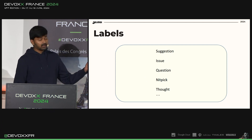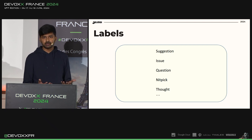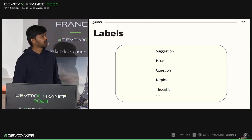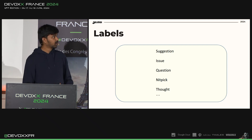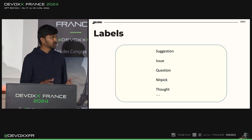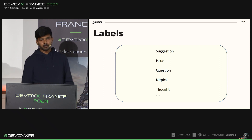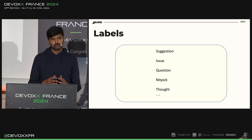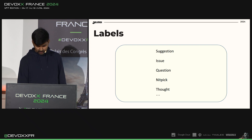What are the labels suggested by conventional comments? If you are giving a suggestion, you can put it under 'suggestion.' If you found an issue in the code change, you can put it under 'issue.' If you want to ask a question, you can use 'question.' If it's a very small change that is not necessarily blocking, you can use 'nitpick.' If you have a thought to do it in some other way, you can use 'thought.' And there are other labels available as well.